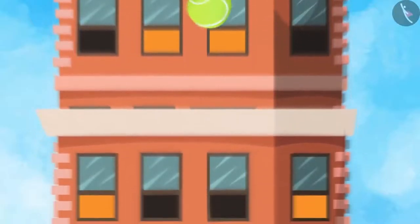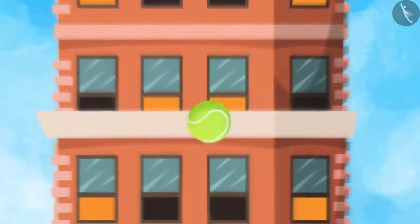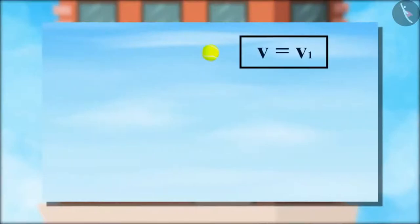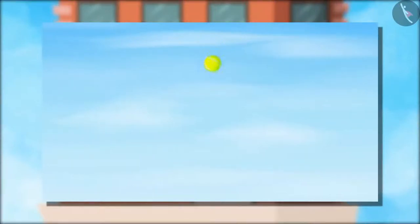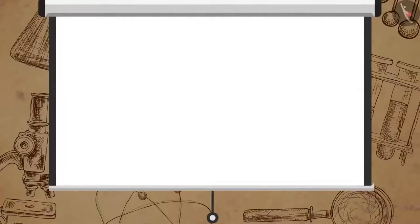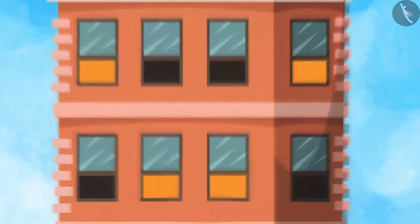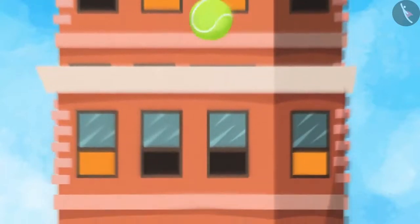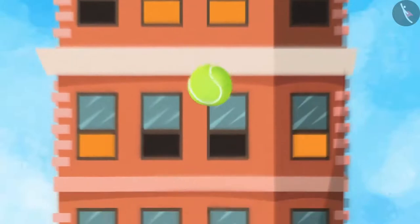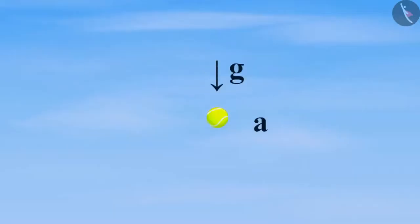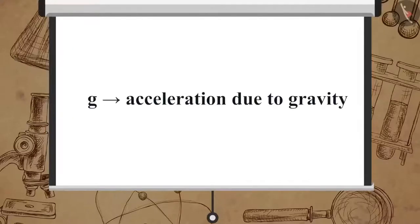When an object is in free fall, there is no change in its direction. But a change in the magnitude of velocity takes place due to gravity. Any change in velocity means acceleration. So when an object is falling towards the earth, an acceleration is involved, and this acceleration is due to the gravity of the earth. We refer to this acceleration as acceleration due to gravity, denoted by g. Its SI unit is meter per second square.